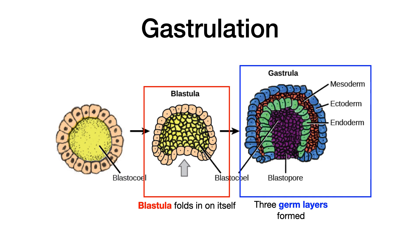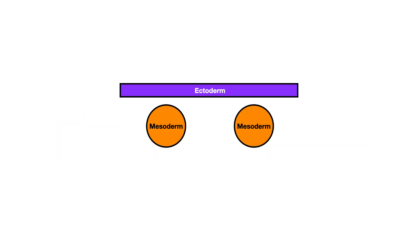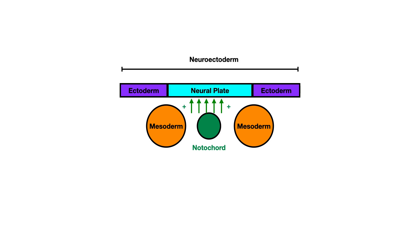In talking about nervous system embryology, we are particularly focused on the ectoderm — the ectoderm is what goes on to become the entire nervous system. We've got an ectoderm shown in purple, mesoderm shown in orange. Between where the mesoderm sits, you get the development of something called the notochord. The notochord will secrete growth factors that act on the ectoderm, telling it to start to differentiate into a neural plate. As that neural plate begins to form in the center, it pushes out the ectoderm laterally. This entire region is referred to as the neuroectoderm.